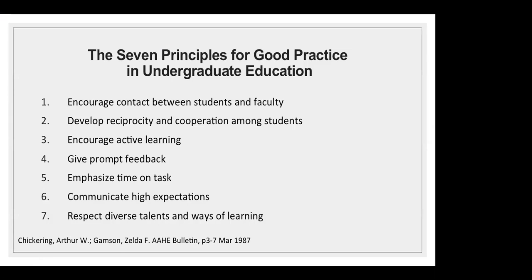Before we begin delving into approaching remote teaching, let's talk about good practices for teaching in general. Arthur Chickering was the first vice president academic and provost at SUNY Empire State College, and in the late 80s he and a group of college leaders from the northeast — representing different types of institutions, learning, and students — came to agreement on the seven principles for good practice in undergraduate education. These were not designed for online learning, but once online learning became a thing, they became adopted as the gold standard for online learning. However, these principles apply to any modality in which you're working with undergraduate students, and with some modification work just as well for graduate students.